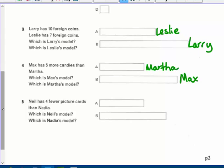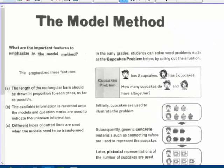Neil has four fewer pictures than Nadia, which is Neil's model. So he has fewer. So we're checking your vocabulary and math. So Neil has fewer. He's on the top than Nadia's on the bottom. Next page.